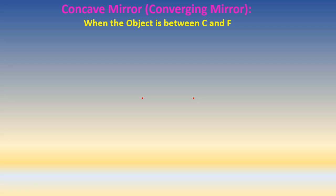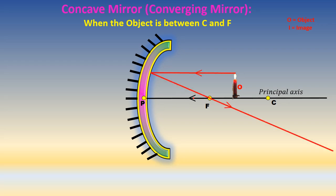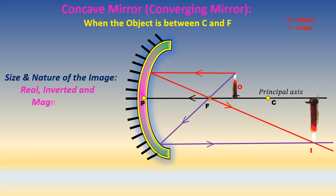When the object is between C and F. Mirror and the principal axis, with the object placed between C and F. The first ray goes parallel to the axis and passes through the focus. The second ray passes through the focus and becomes parallel to the axis. The image is formed and is very much magnified. Size and nature of the image: real, inverted, and magnified.